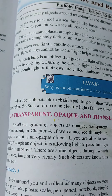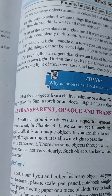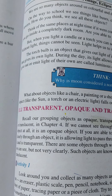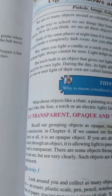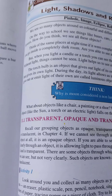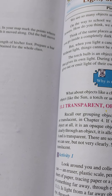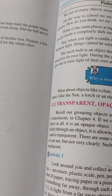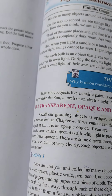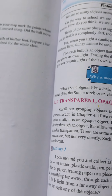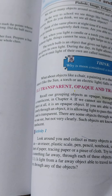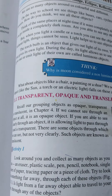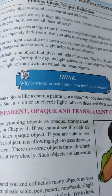We see many objects around us, colorful and different. We see a lot of things — some things are colorful, different things are different. When we go to school, we see things like buses, cars, cycles, trees, and animals.